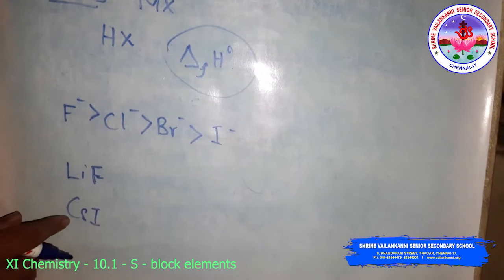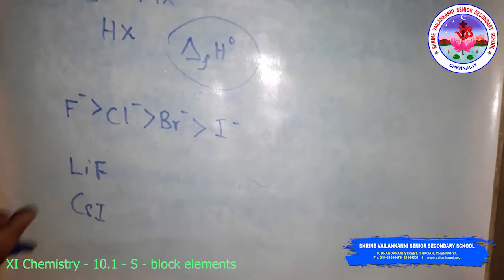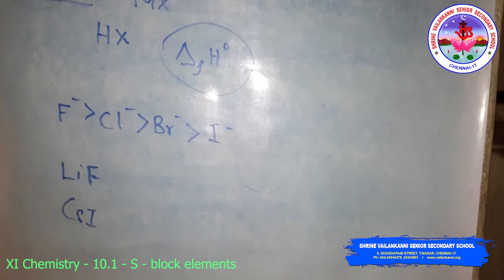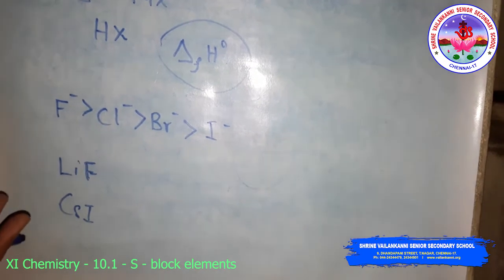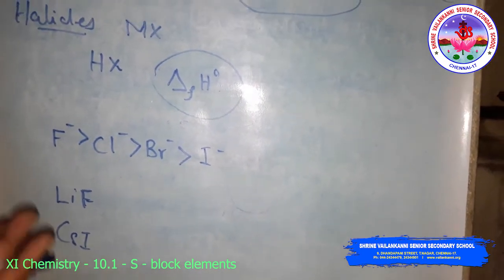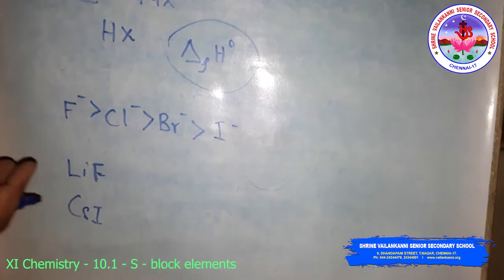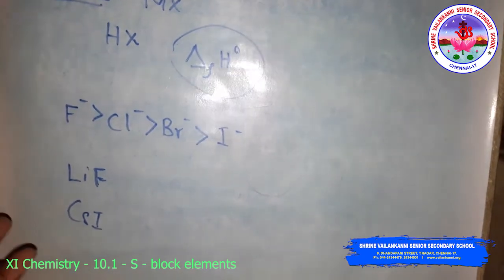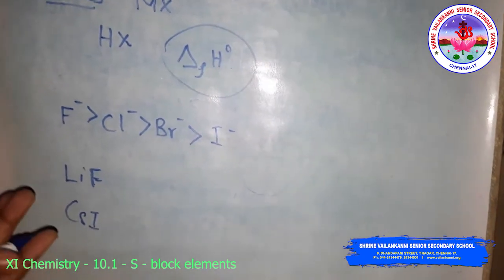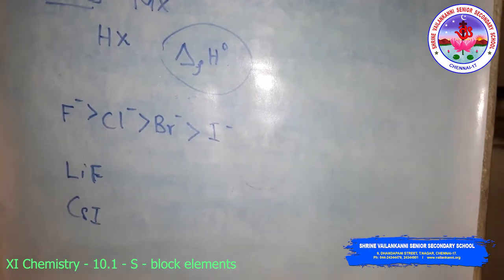The low solubility of cesium iodide is due to the smaller hydration enthalpy of its two ions. The halides of lithium are soluble in organic solvents like ethanol, acetone, ethyl acetate, and pyridine. Lithium chloride also dissolves in pyridine.